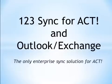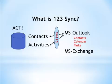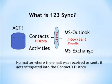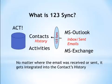Welcome to our presentation of 123 Synchronizer for ACT and Outlook Exchange. 123 Synchronizer is a middleware that synchronizes ACT contacts and activities with Outlook or with Exchange. In addition, 123 Sync also integrates the inbox and the sent emails from Outlook or Exchange into the contact history in ACT, keeping track of all the interaction between the contacts and emails.